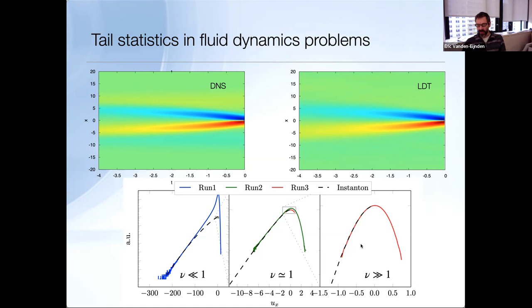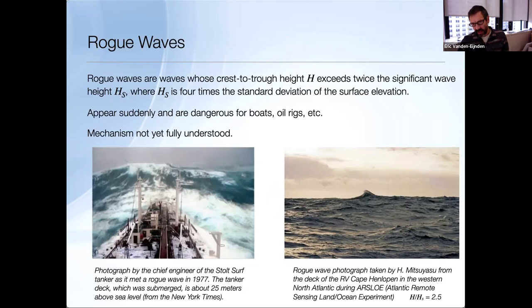Since then, Reiner Grauer and Tobias Grafke have applied this method to look at how high gradients are created in the Euler equations. The same idea applies, but the computation is much more challenging since the instanton equations now involve solving the Navier-Stokes equation on one hand and a dual problem for the optimal control on the other.